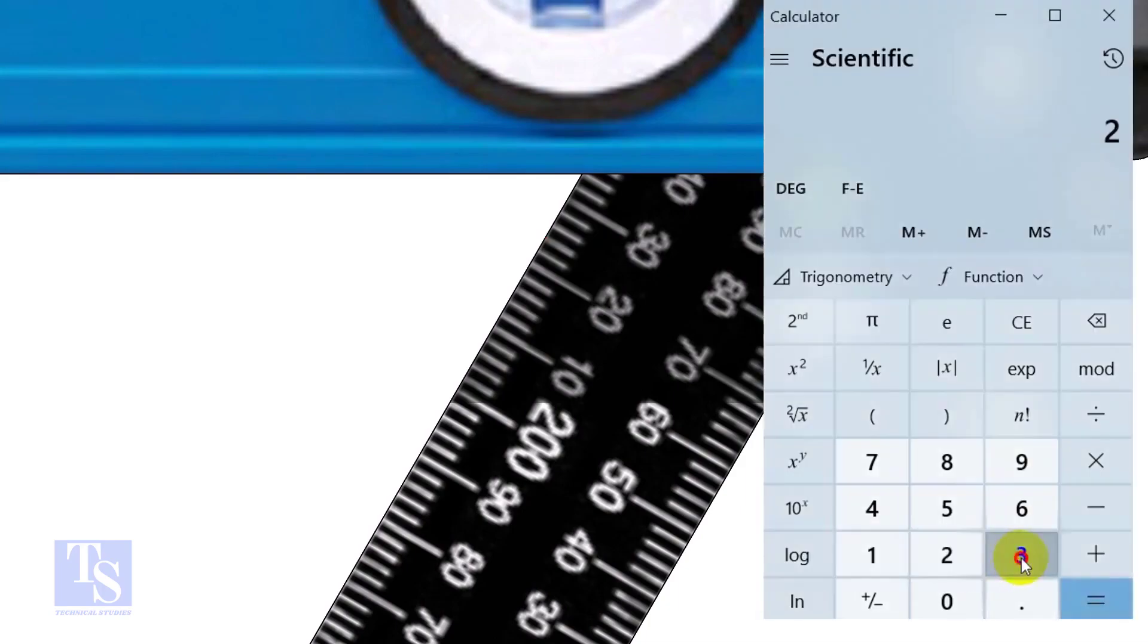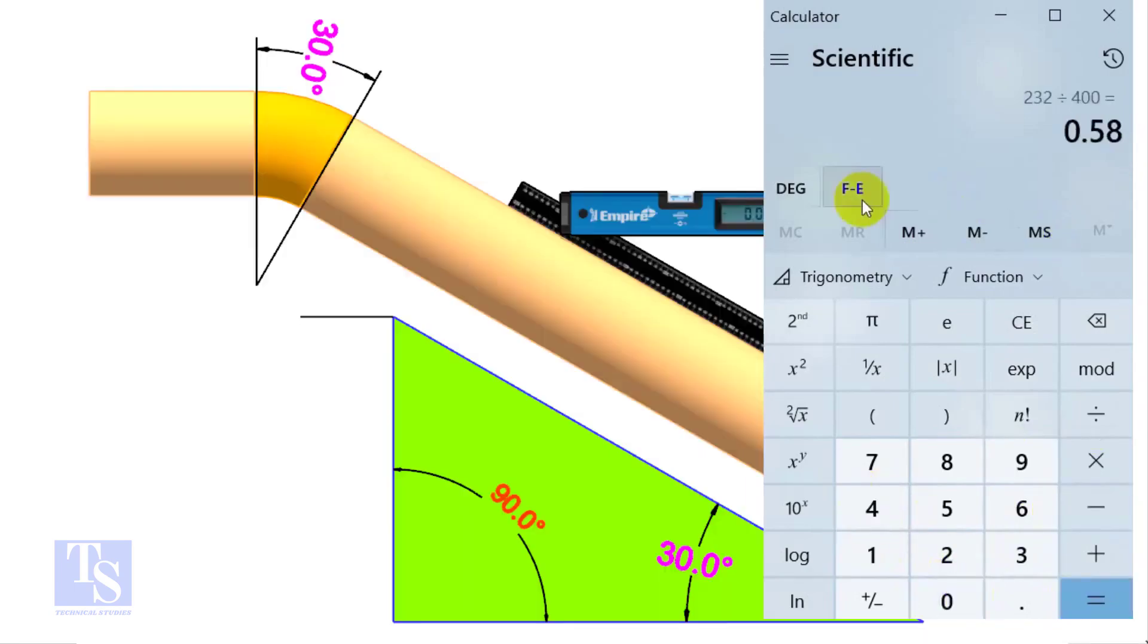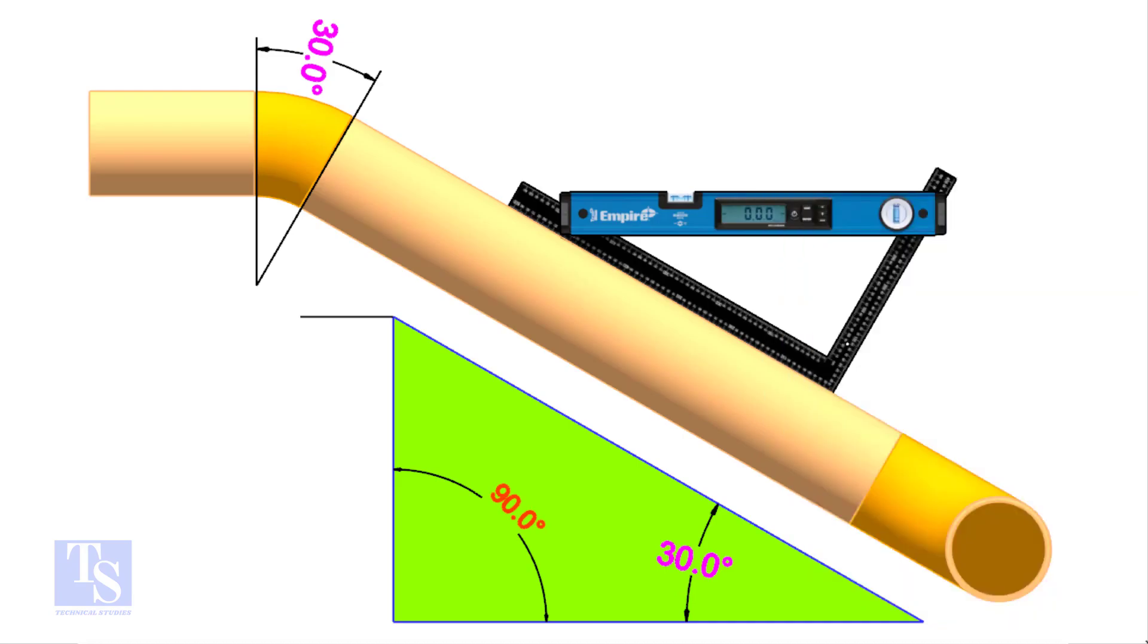Divide 232 by 400. Apply tan inverse or second tan. If you round the figure, the answer is 30 degrees. Thank you for watching, have a nice day.